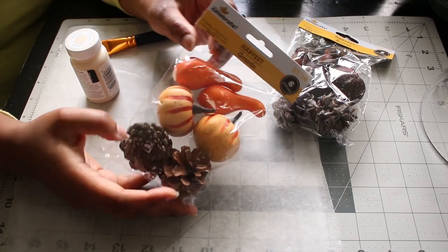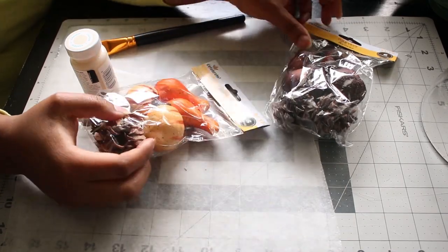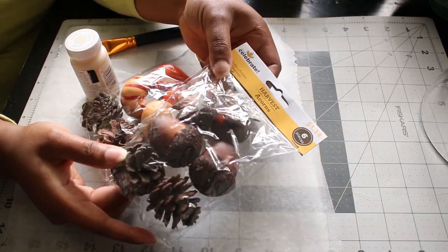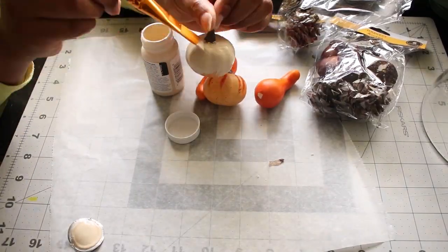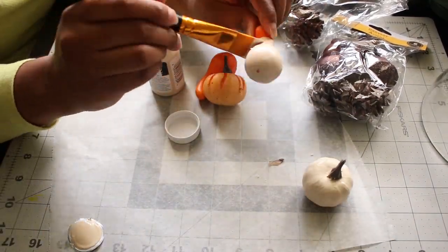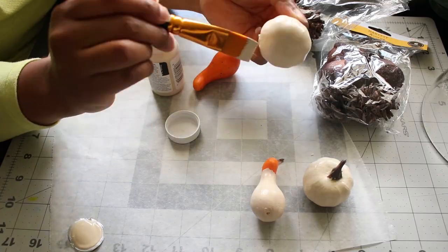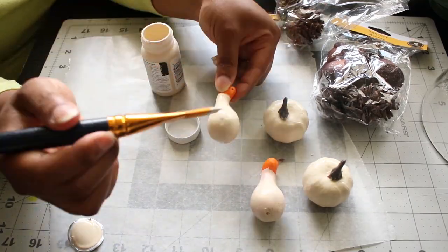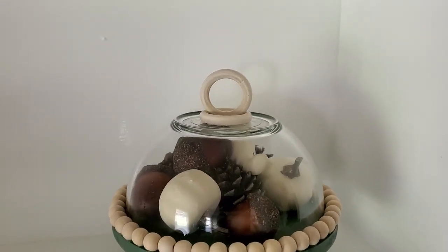Now, to fill my cloche, I got these mini vase filler packs from Walmart. These are cheaper than what you would get at Dollar Tree, and I used chalk paint to make the pumpkins and gourds more neutral, and I just love the look of this little piece.